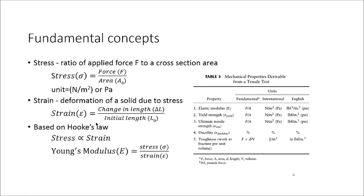Based on this stress the material will undergo deformation. For example, in a dental implant, while eating, stress would be applied and the implant has to maintain its integrity. That deformation is called strain — strain is change in length divided by original length. Based on these two factors there is a relation called Hooke's law, which introduces a new parameter called Young's modulus, which is the ratio of stress to strain. This is an important and commonly used parameter in biomaterials for defining the mechanical property of a material.